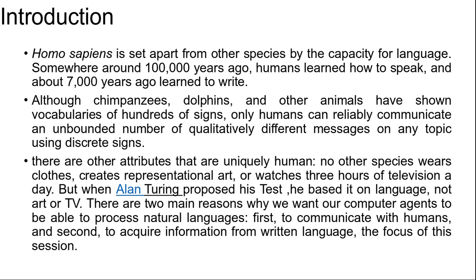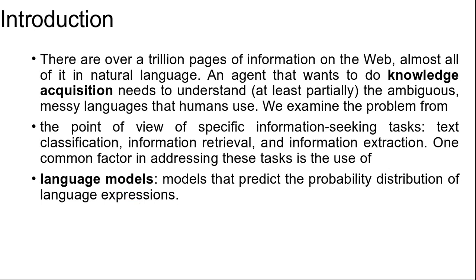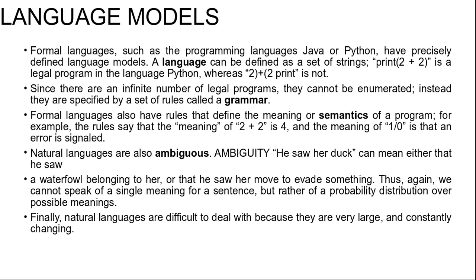We start with our first language model. Formal languages such as the programming languages Java or Python have precisely defined language models. A language can be defined as a set of strings — for example, print(2+2) is a legal program in Python, whereas "2 2) + (2 print" is not. Since there are an infinite number of legal programs, they cannot be enumerated; instead, they are specified by a set of rules called a grammar.